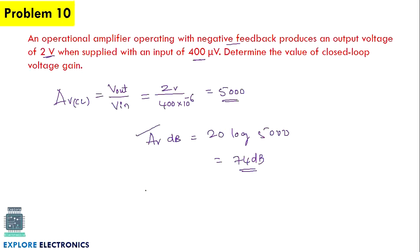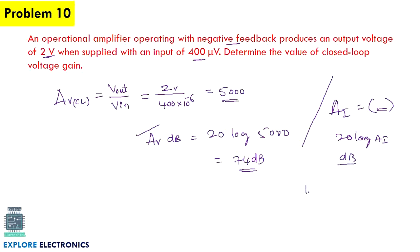Similarly, if current gain Ai is asked, we take 20·log of that value to represent it in dB. For power gain, we take 10·log of the power gain. Remember: for current gain and voltage gain use 20·log; for power gain use 10·log.